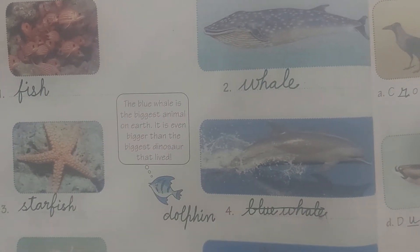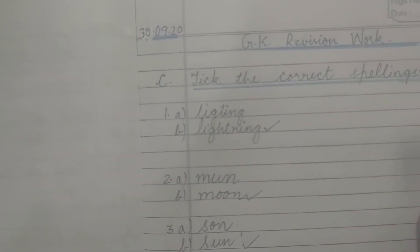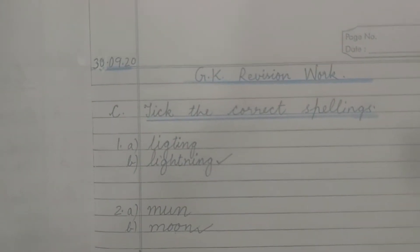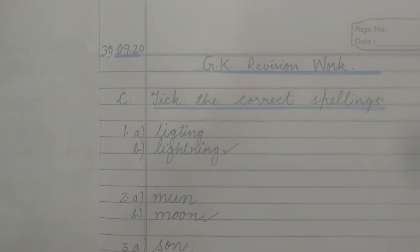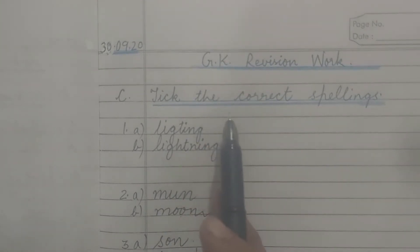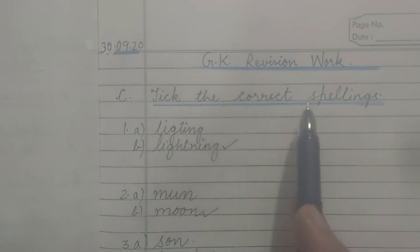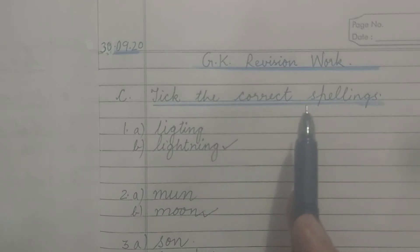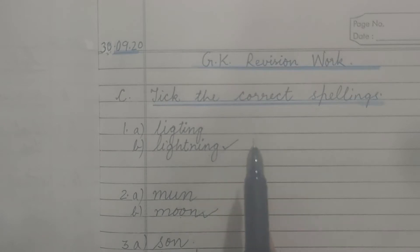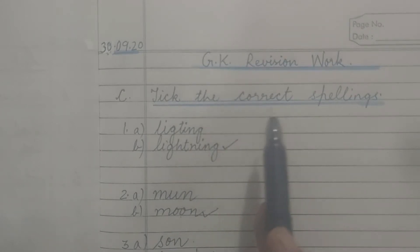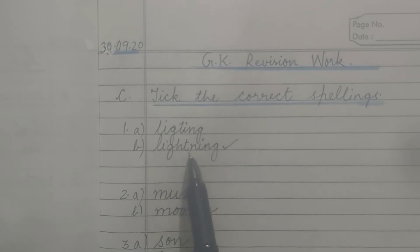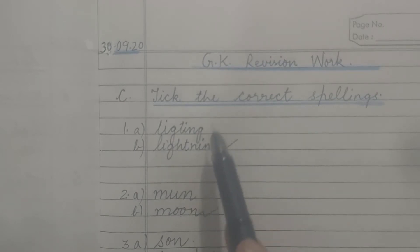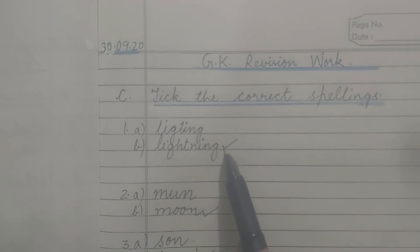Now after this we are going to do revision work. In this copy we are going to do revision — we have already done one. Tick the correct spelling. You are not supposed to copy the question; you have to do this in your survey hard, so just tick the correct answer. First question: 'lighting' or 'lightning'? Both exist, but in the context of your lesson, 'lightning' is the correct word.